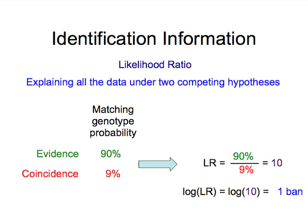From genotype probabilities we can go immediately to identification information. The likelihood ratio is a measure of identification information, and the number of zeros of the logarithm of that statistic is the standard additive measure of information in science. The likelihood ratio explains all the data under two competing hypotheses. As we just saw, the matching genotype probability for the evidence was about 90 percent. A coincidental random person for that allele pair was 9 percent. The ratio of 90 percent to 9 percent is 10 — there's one zero in the number 10, it's 10 to the 1.